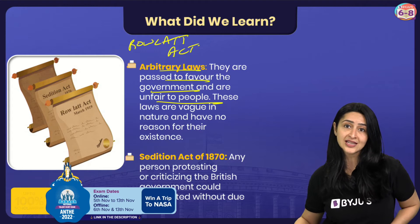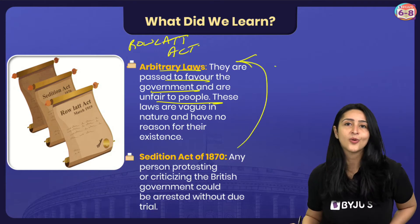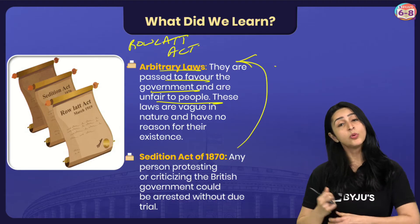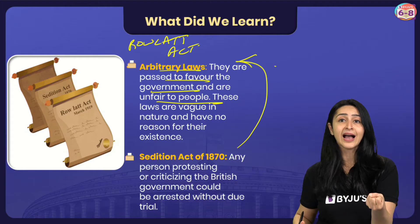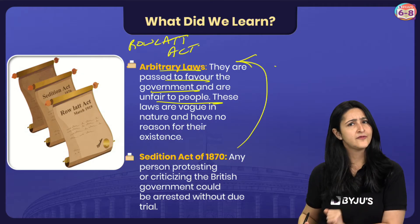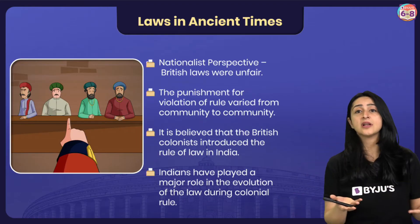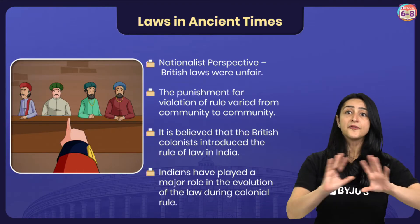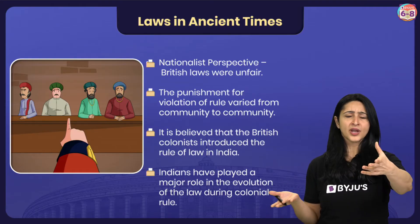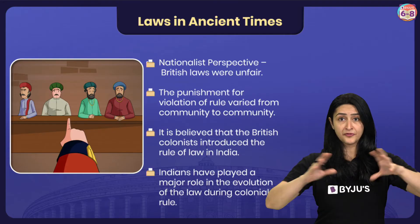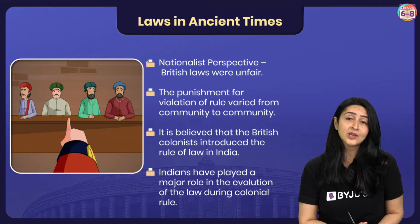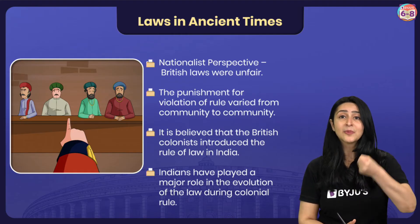The Sedition Act of 1870 is another example of arbitrary law. It continued to exist as part of British law and was implemented to curb the voices of people who revolted against the British government. This act authorised the arrest of any person protesting or criticising the British government without due trial. Similarly, in ancient India, there were no uniform rules for punishment. Different communities enjoyed different degrees of law, and if two people from different communities committed the same crime, the one from the lower caste would be more harshly punished. That is why we need the rule of law.